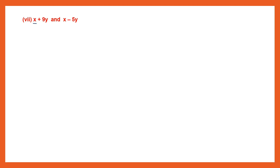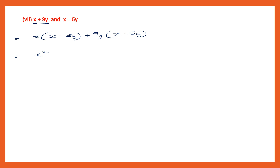Question 7: take the first term x and multiply the second binomial, x minus 5y. Then take the second term of the first binomial, plus 9y, into the whole of the second binomial, x minus 5y. Now multiply x into x — x into x is x to the power of 2. Then x into minus 5y: plus into minus is minus, giving minus 5xy.